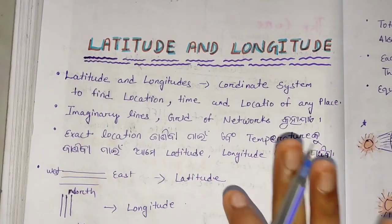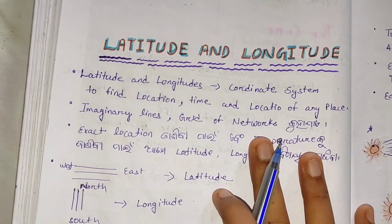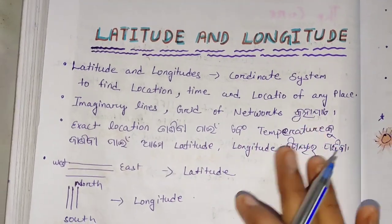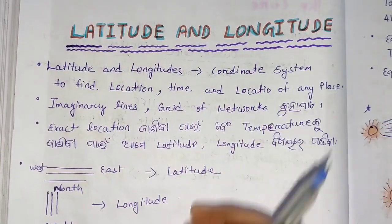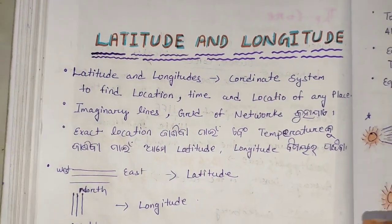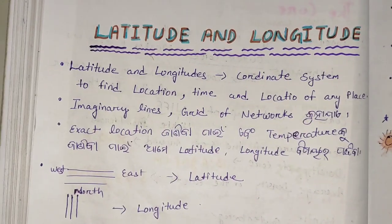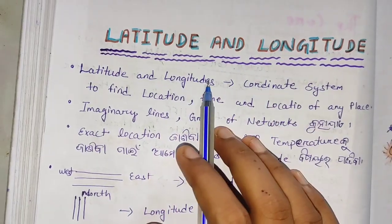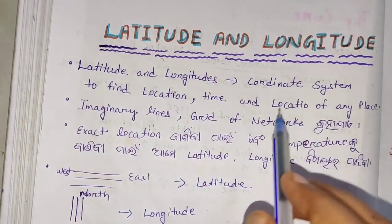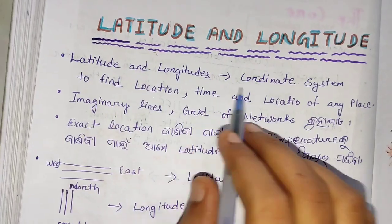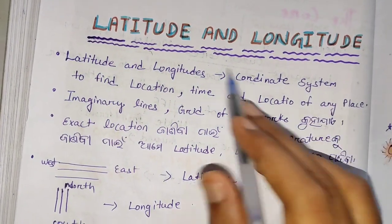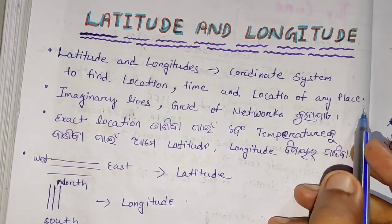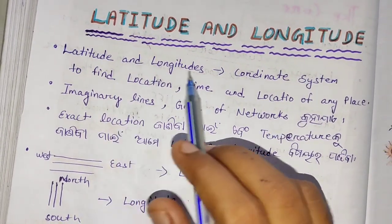Latitude and longitude class. We will complete the tables. Latitude and longitude is a coordinate system used to find location. We use it to find the time and location of any place.